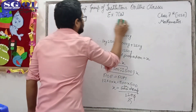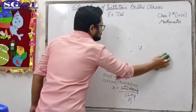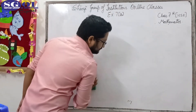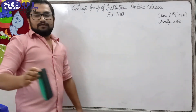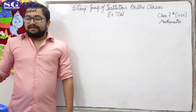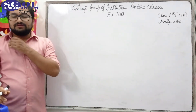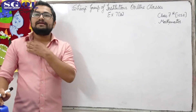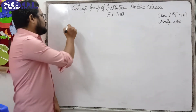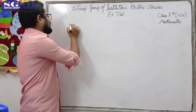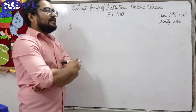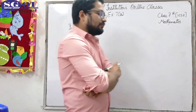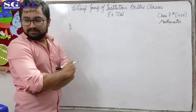Let's move to question number 7. Question number 7 says: show that 6, 36, and 216 are in continued proportion. For continued proportion, the product of extremes should be equal to the product of means.